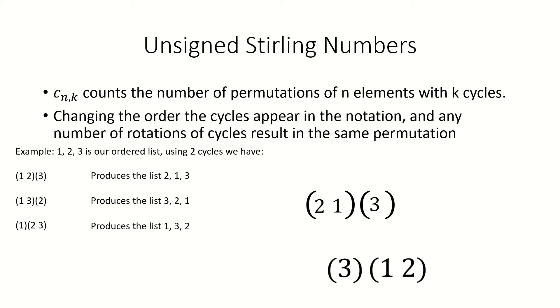These do not change the permutation. Since there are three distinct permutations of a list of three elements with two cycles, c sub 3 2 equals 3.